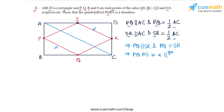Now all we need to show is that the adjacent sides of this parallelogram are equal, and that will mean that PQRS is also a rhombus. To prove that, let's draw the other diagonal BD as well. Now think about the relationship of PS with BD and the relationship of QR with BD.